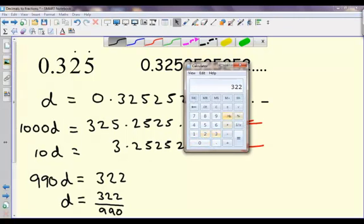And we'll just check it. 322 over 990 comes out as 0.3252525, and that's the original decimal I had. We don't worry about that 3 on the end, that's just rounding.